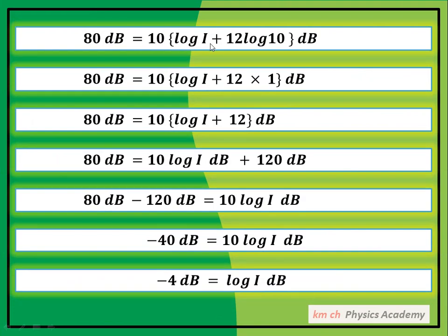80 dB = 10[log I + 12] dB = 10 log I + 120 dB۔ 120 dB کو ادھر لے جائیں: 80 dB − 120 dB = 10 log I dB، تو −40 dB = 10 log I dB۔ 10 کو ادھر لے جائیں: −40/10 = log I، تو log I = −4۔ دونوں طرف سے dB cancel ہو جائے گا۔